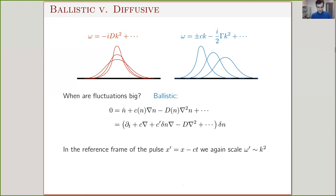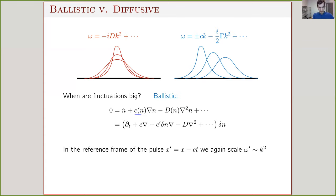Now let's look at ballistic systems — systems that have a sound mode. The dispersion relation of the equation of motion for density looks linear in gradient with diffusive spreading. We expand the speed of sound, which can depend on the equation of state, temperature, and hydrodynamic fields — leading to a non-linearity with a single gradient. Let's try to figure out if this term is relevant. It's convenient to follow the pulse of sound — working in coordinates where it's just spreading diffusively — so the equation of motion in this frame has the leading term removed.